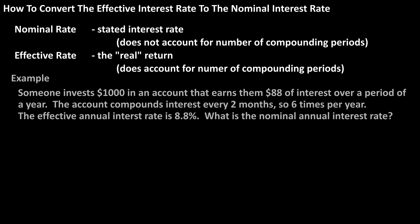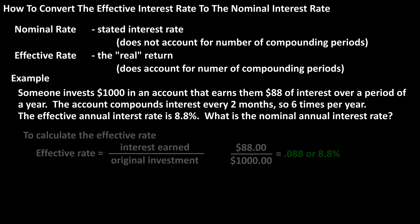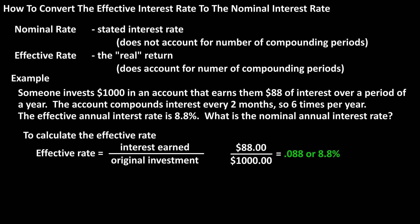As an example, if someone invests $1,000 in an account that makes them $88 of interest over a year, and the account compounds interest every two months — so six times per year — then the effective annual interest rate is 8.8%: $88 divided by $1,000.